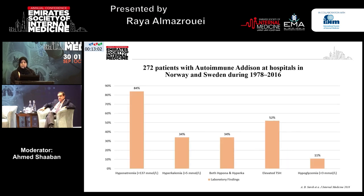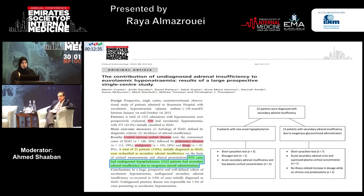Hyponatremia was present in almost 80% of cases, while only a third had hyperkalemia — so the classic finding of hyponatremia and hyperkalemia was present in only a third of patients. Multi-TSH elevation was present in 50% of cases. Hypoglycemia was uncommon, but remember the mean age here was 36, so the majority were adults. Hypoglycemia is more frequently found in pediatric patients.